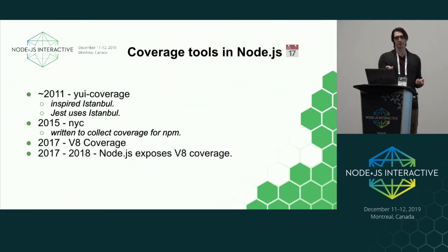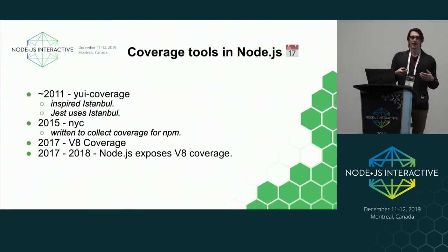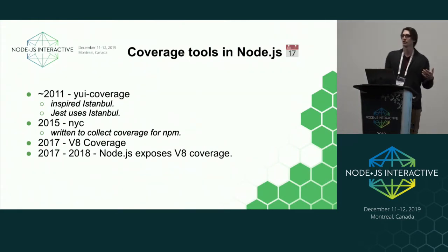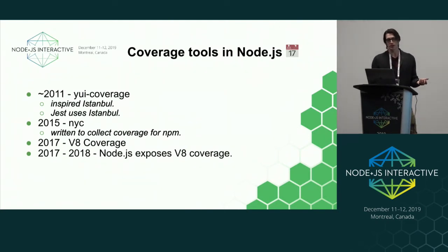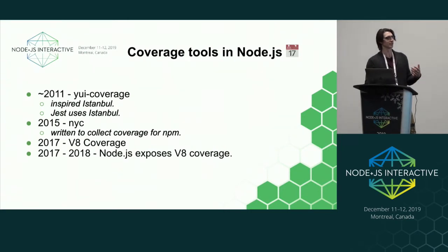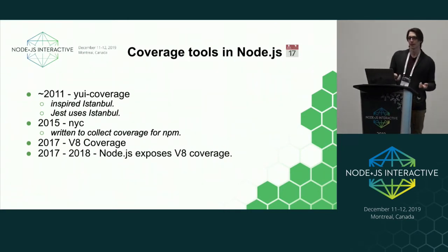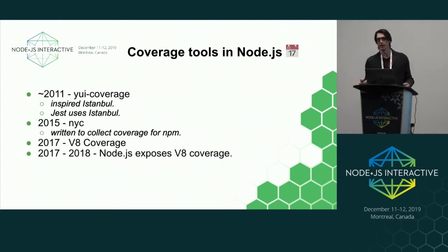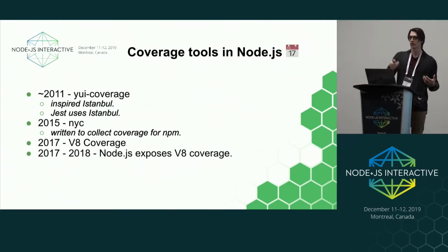Jumping to the Node.js community, we were actually a little late to the game. Our first really popular tool was called YUI Coverage, part of the YUI tool suite. It came out when Esprima — a JavaScript parser that lets you do your own parsing — was released, which enabled a lot of JavaScript-based coverage collectors. Prior to this, people would actually transpile down to Java and use something like JCov. YUI Coverage has a direct lineage to Istanbul, a popular coverage tool used in the Node community, which is used by Jest. NYC, which I wrote while at npm, also uses Istanbul.